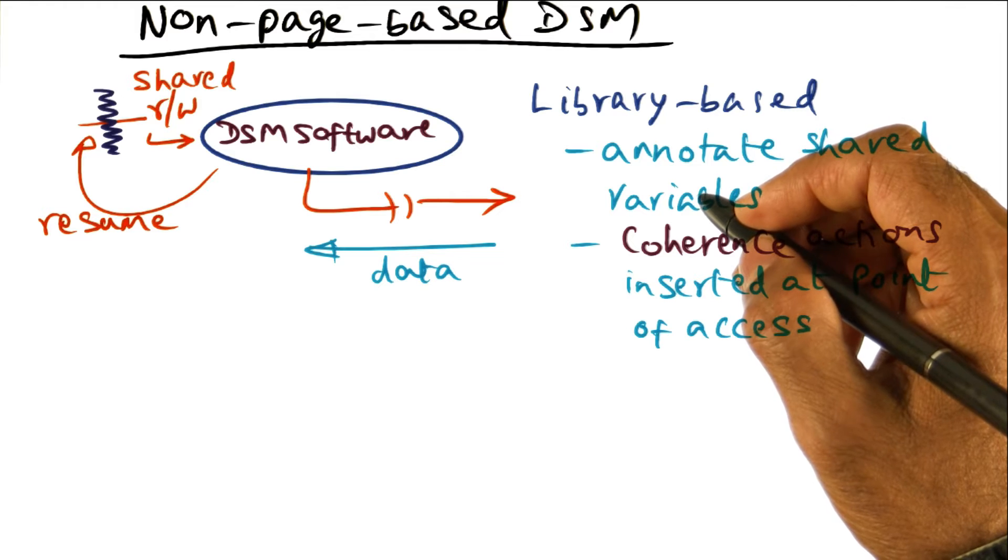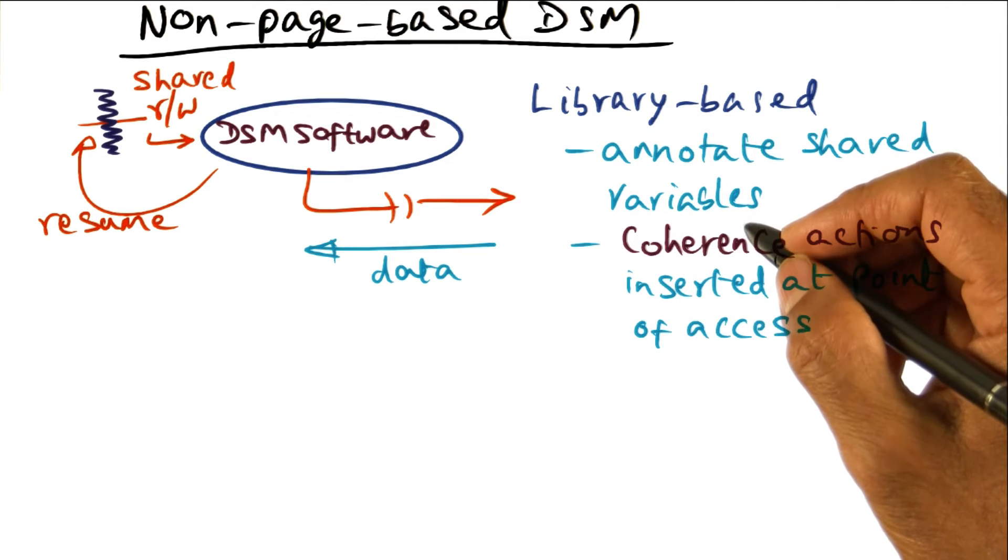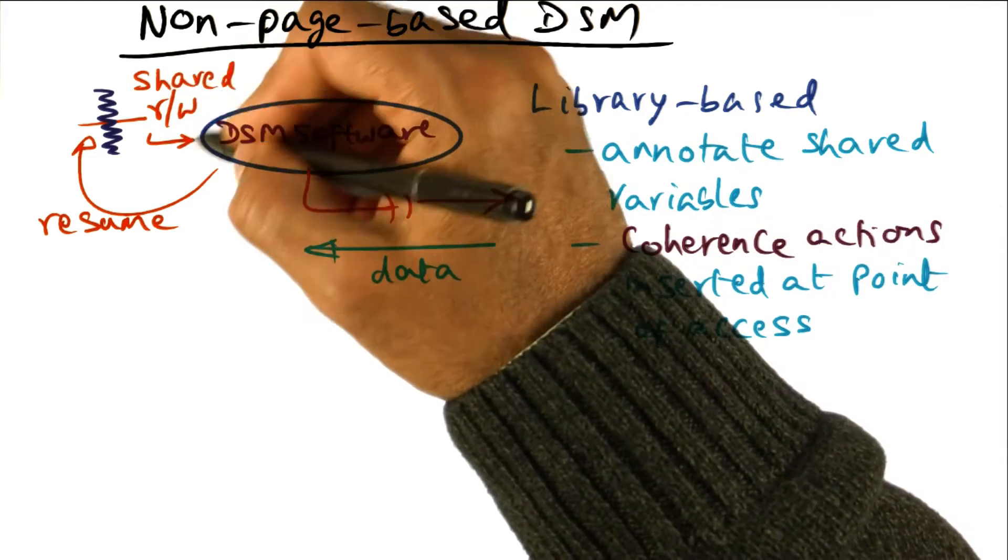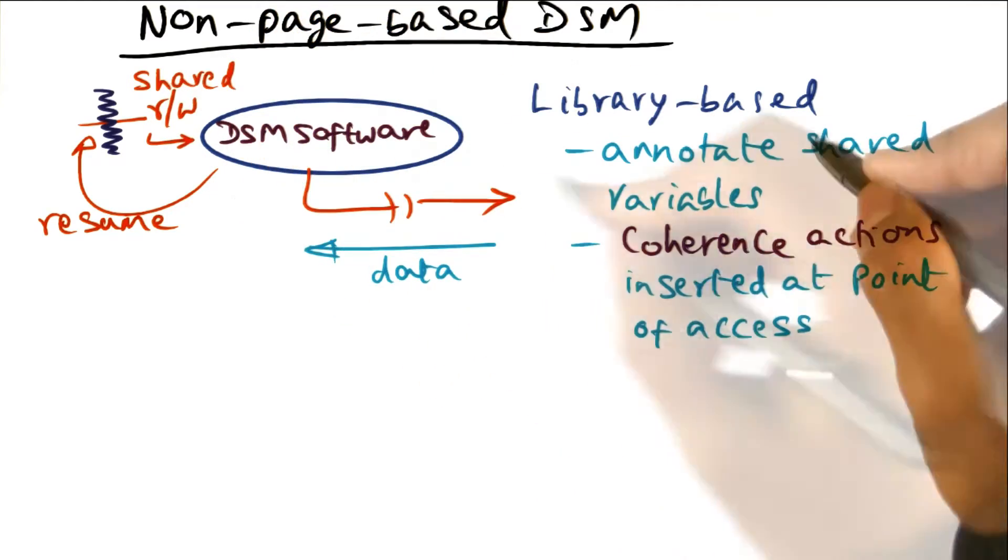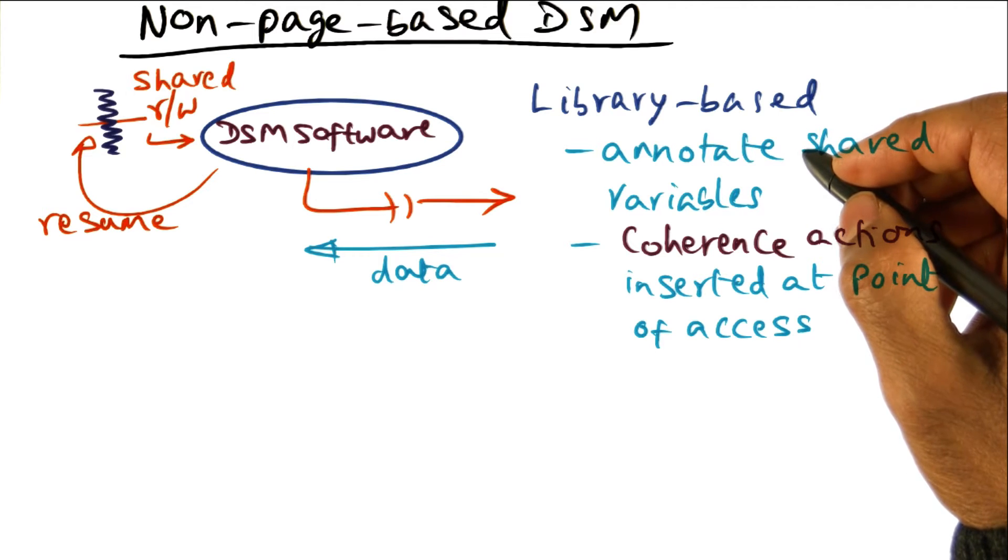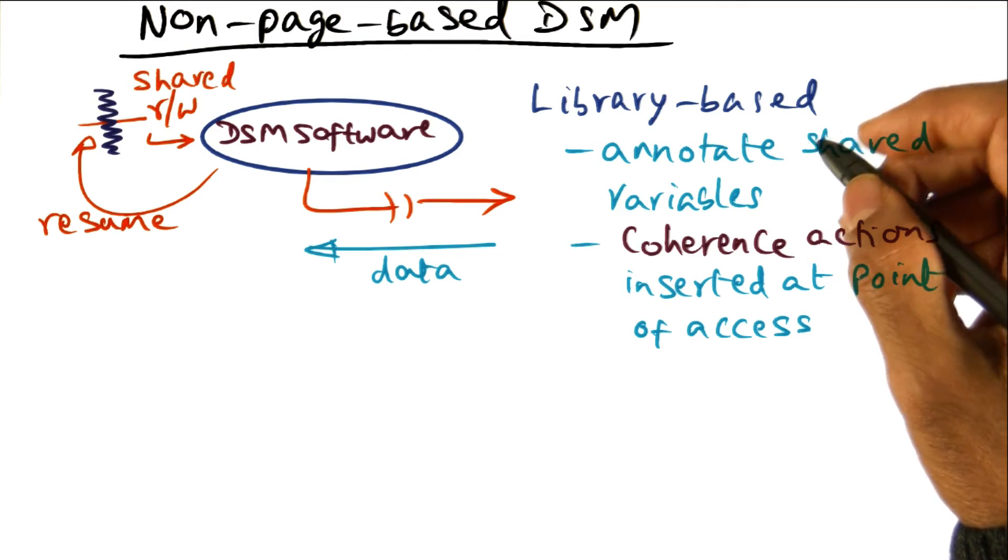Examples of systems that use this mechanism include Shasta, that was done at Digital Equipment Corporation, and Beehive, which was done at Georgia Tech. And because we are doing this sharing at the level of variables, you don't have any false sharing, which is possible with page based systems and single writer cache coherence protocol.